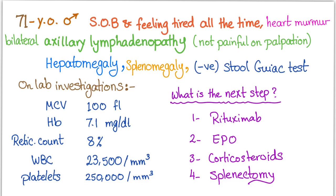Here is a question: a 71-year-old male with shortness of breath and fatigue. On exam: heart murmur, bilateral axillary lymphadenopathy with non-tender lymph nodes, hepatomegaly, and a negative stool guaiac test. Labs: MCV 100, hemoglobin 7.1, reticulocyte count 8%, white blood cells 23,000, platelets 250,000. What's the next step? Give rituximab, give EPO, give corticosteroids, or perform splenectomy? Let me know in the comments or on my Facebook page where I will post the answer.